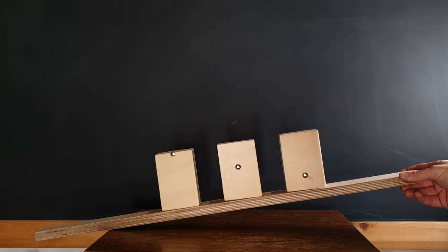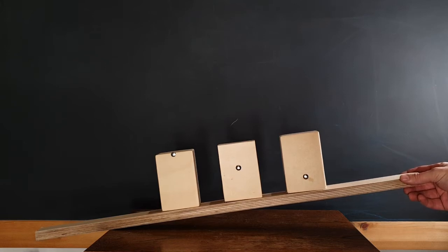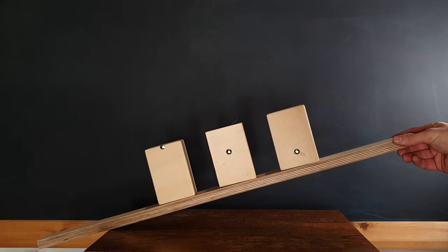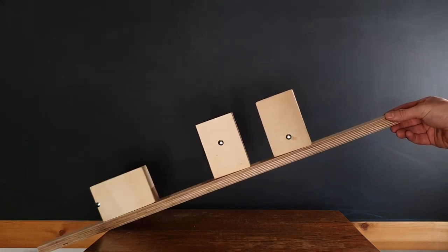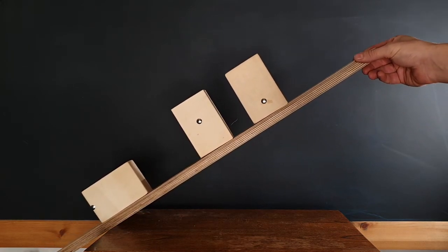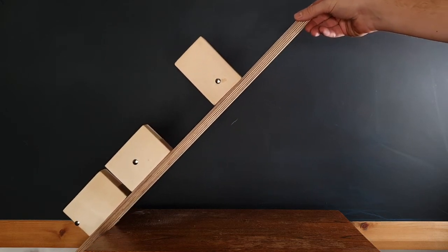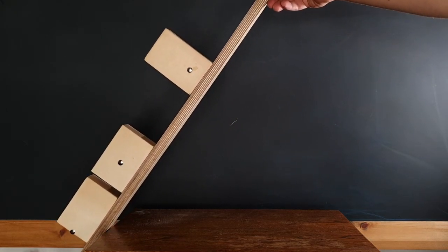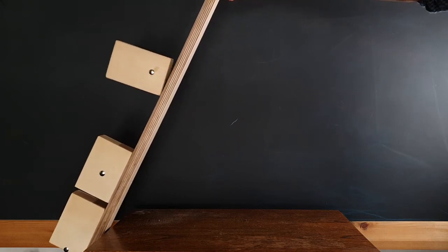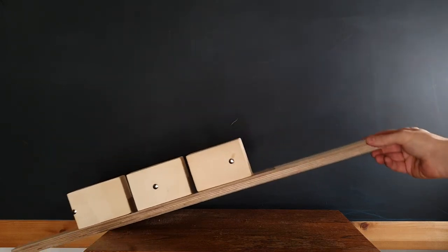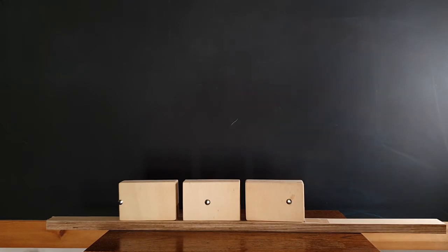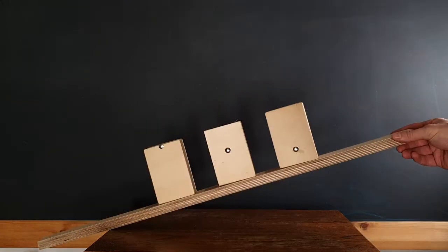Have you got a guess? Let's see what happens. We increase the board angle and we can see that the object with the high center of mass topples first, then the one with a slightly lower center of mass, and finally the one with a very low center of mass needs a very steep angle to topple. But why does this happen?